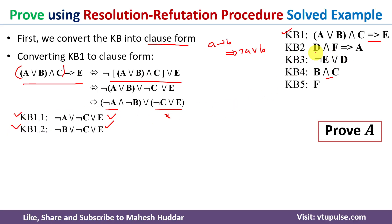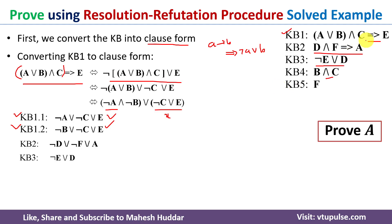The second knowledge base also contains an implication. Removing it gives: negation of (D and F) or A. Taking the negation inside gives: negation of D or negation of F or A. Knowledge base 3 is kept as-is since it has no implication or AND. Knowledge base 4 has an AND, so we remove it — it becomes B (KB 4.1) and C (KB 4.2). Knowledge base 5 is also kept as-is.